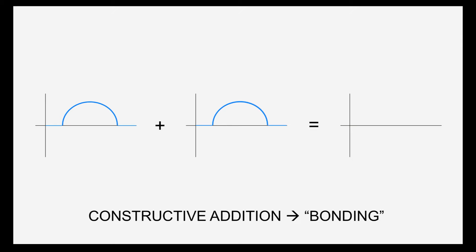Look at these two waves. They both have positive parts that line up together. When these two waves are added together, the positive ends add to make a wave with a higher amplitude. This is called constructive addition.